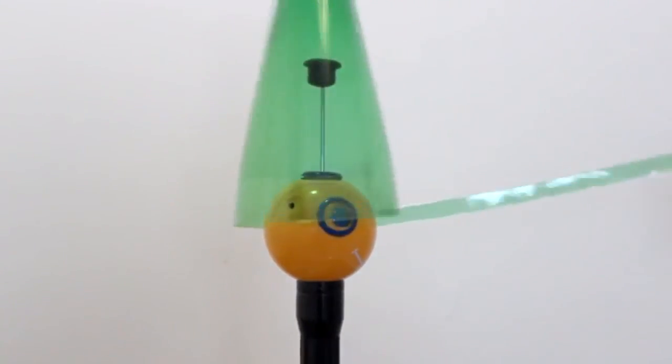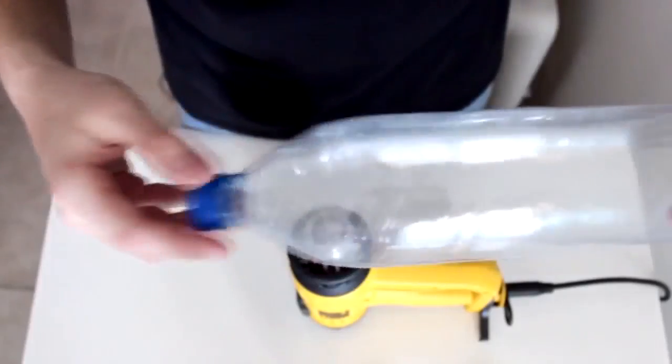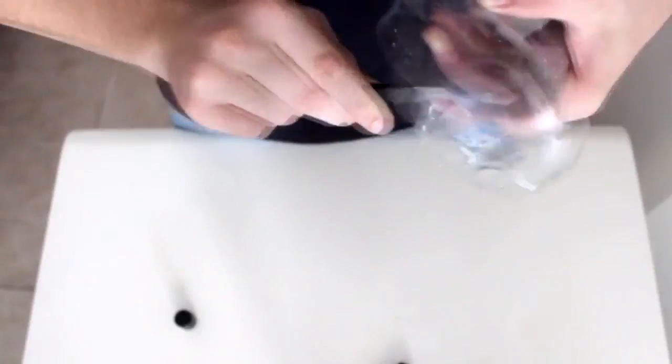ChupaCut is really easy to use. We'll walk you through it in just a few seconds. Start by warming up the bottle. We're using a heat gun but you can use your hair dryer or stove. Then cut off the bottom. You can use scissors or any blade.